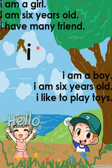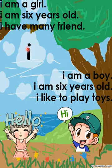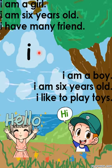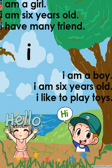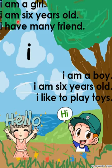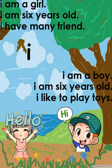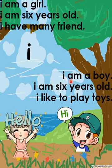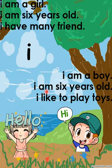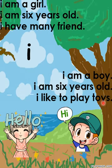The next one is 'I'. 'I' means 'saya' — yourself. We use the word 'I' to show that you are talking about yourself, and it can be used by both boys and girls. Example for a girl: I am a girl. I am six years old. I have many friends. For a boy: I am a boy. I am six years old. I like to play with toys.